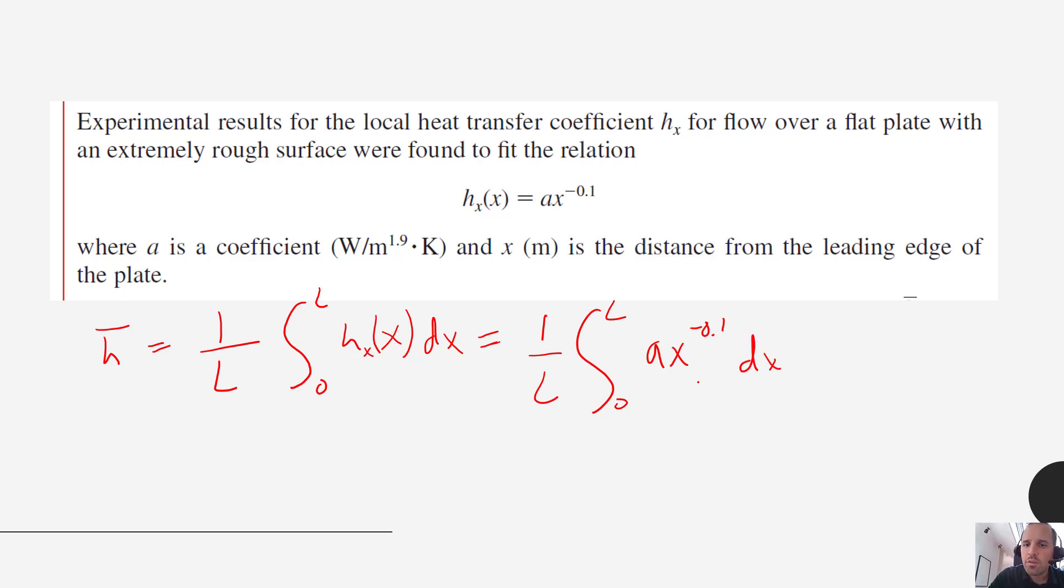So doing that integral - we have our integration variable x raised to a power, so the integral would equal x to the 0.9. We add 1 and then we divide that by the exponential term plus 1. And then we would have this 1 over L and then we would evaluate this at L and 0.